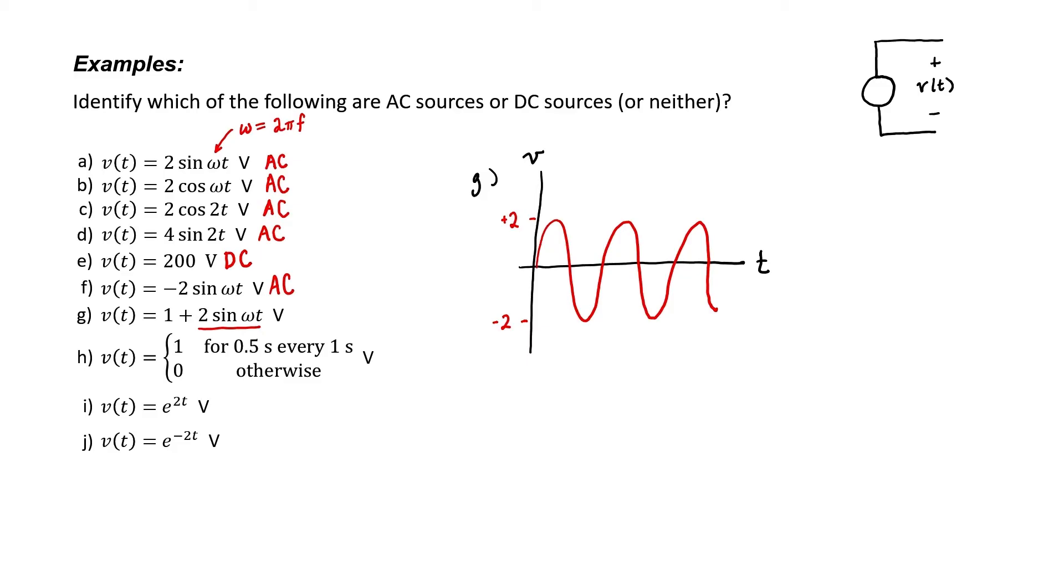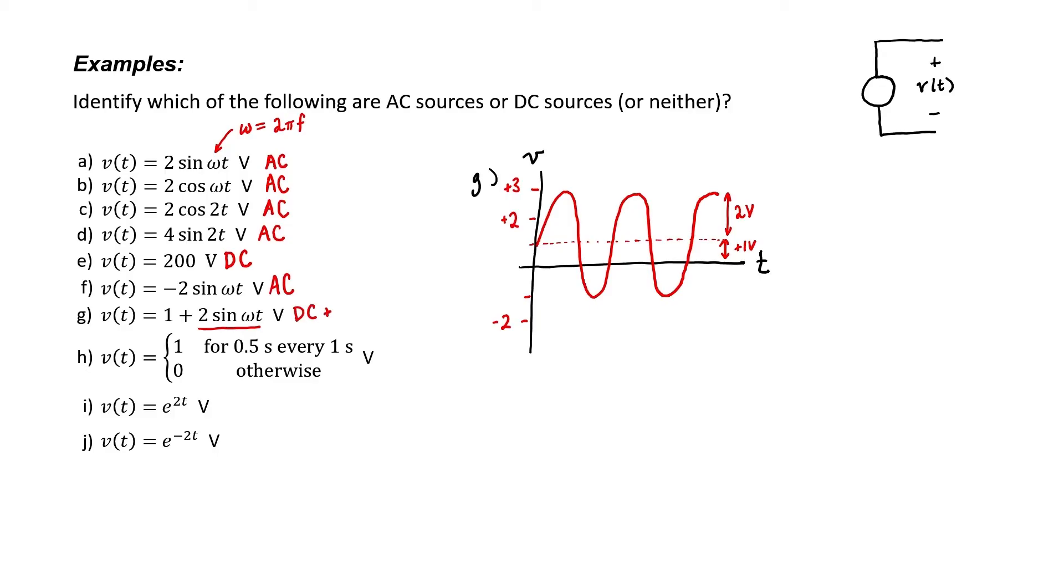If I add 1 everywhere along this graph then it's going to shift up to plus 3 and it's only going to swing down to minus 1. The amplitude is still 2 volts but this source has a DC offset of plus 1 volt. Therefore this is not exactly an AC source but it's not a DC source either. This source has both AC and DC components in it.